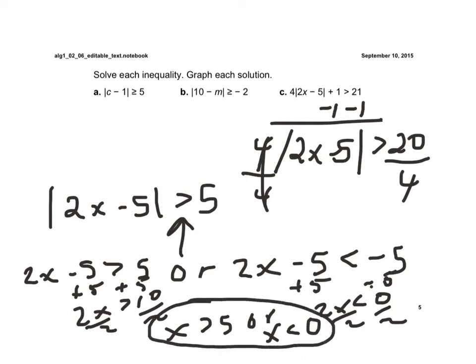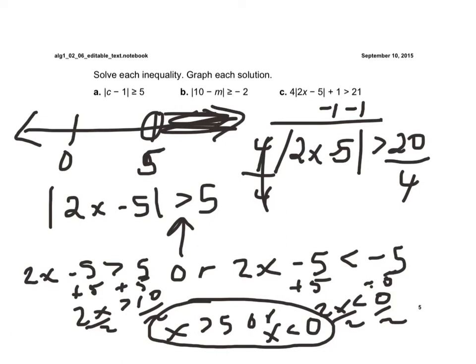So I have x is greater than 5 or x is less than 0. Now if I graph this up here, I have 0 here, 5 here. It's greater than 5 or less than 0. So that's solving absolute value inequalities when it's a greater than symbol.